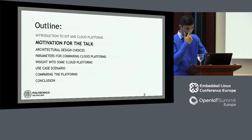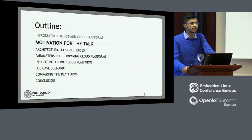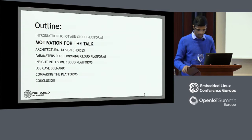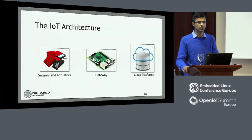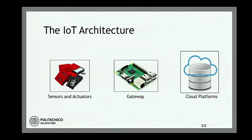Moving on to the motivation — why I wanted to talk about cloud platforms. If you look at the architecture, we have sensors on one end, data is sent to a gateway, which forwards it to the cloud platform where we can process the data. Based on this processing, we can actuate something at the edge. Today I am motivated to talk specifically about the cloud platform section of this architecture.